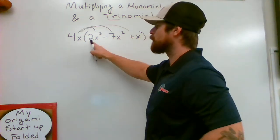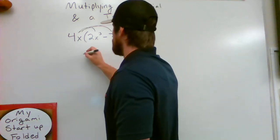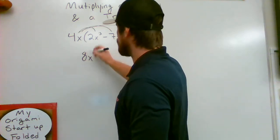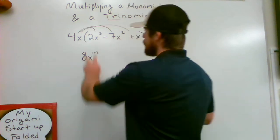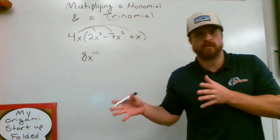We also want to multiply the 4 and the 2 because they're coefficients. So 4 times 2 gives me an 8, and then I need to say x to the 1 plus 3. I'm adding these two exponents together based on the exponent rule product rule.